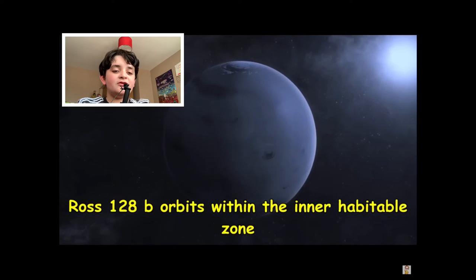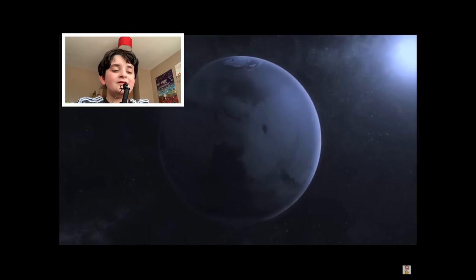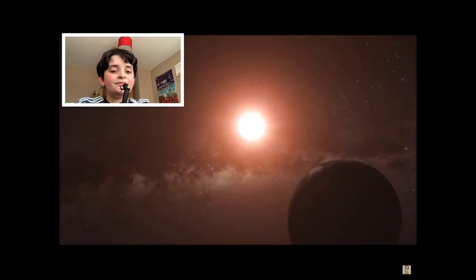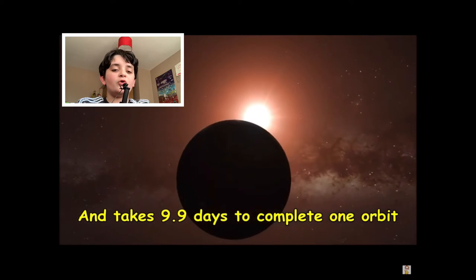Ross128b orbits within the inner habitable zone, so it's habitable. It takes 9.9 days to complete one orbit.